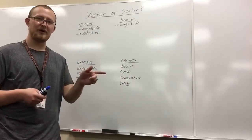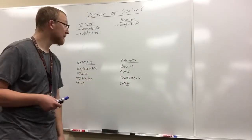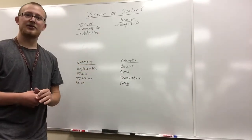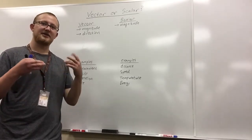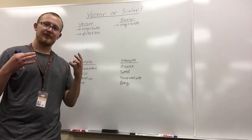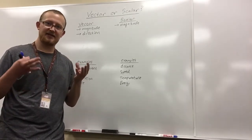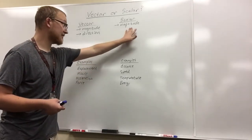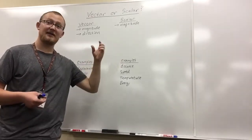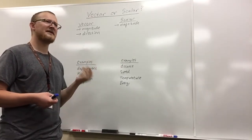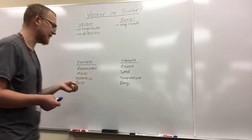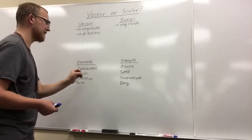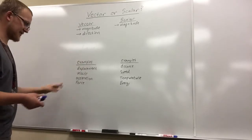A scalar, on the other hand, is just a magnitude — it doesn't have any direction. A magnitude tells you the amount of something, but without any directional information. Let's get to some examples.